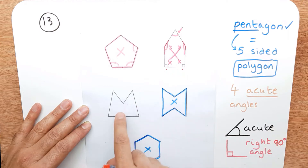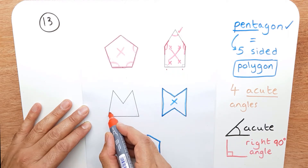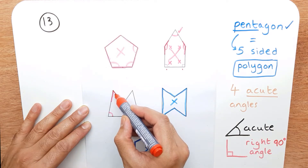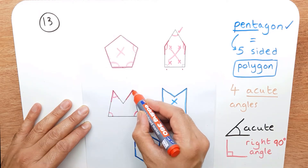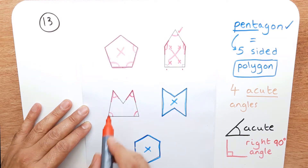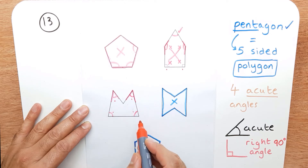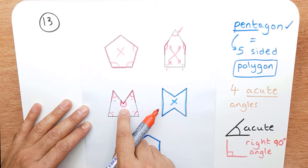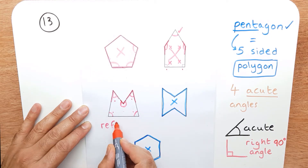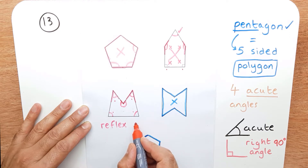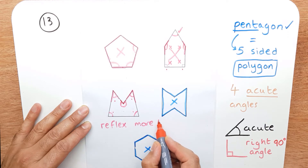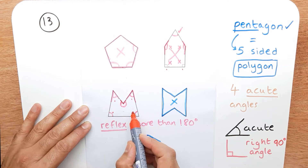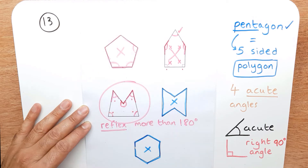Those two pentagons are no good, so there's only one pentagon left. This angle is acute, this one is acute, and this vertex is acute — that's one, two, three, four acute angles, which is what we want. This last angle has a special name: it's called a reflex angle, and it has to be more than 180 degrees. So this pentagon has four acute angles and that's the one we're interested in.